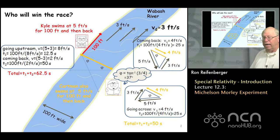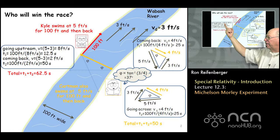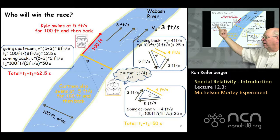The reason is pretty simple. The red swimmer is going at 5 feet per second, and there's a drift velocity of 3 feet per second. So as he swims out, he's going to be moving at 8 feet per second. The time it's going to take him to cover 100 feet is going to be about 12 and a half seconds.